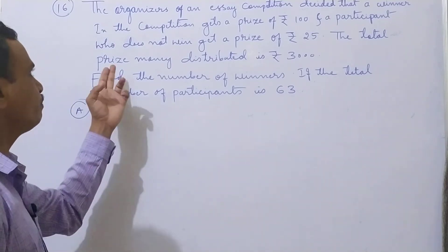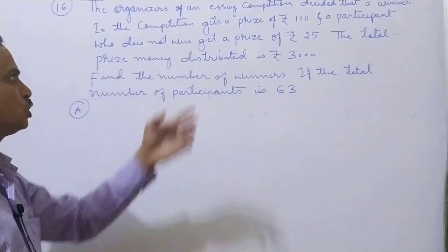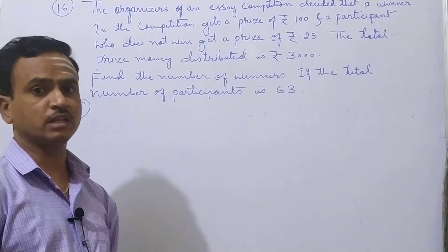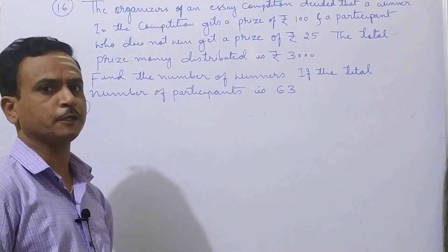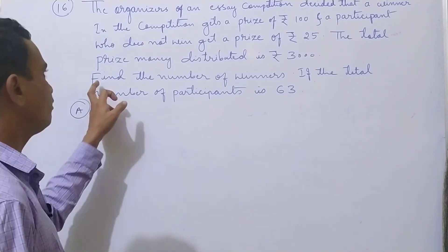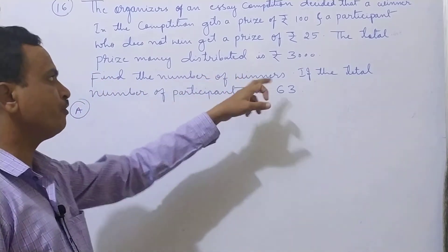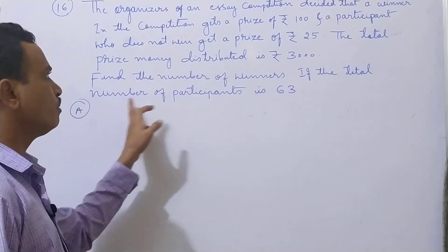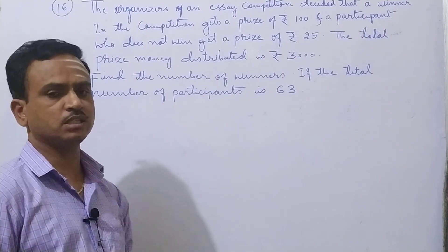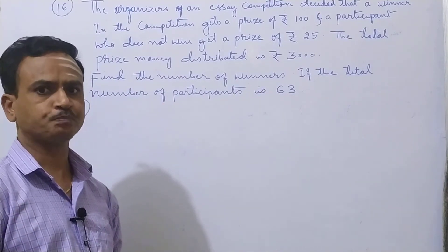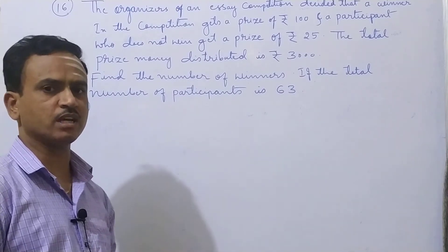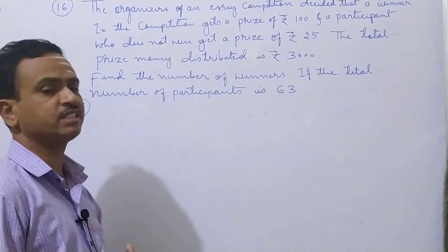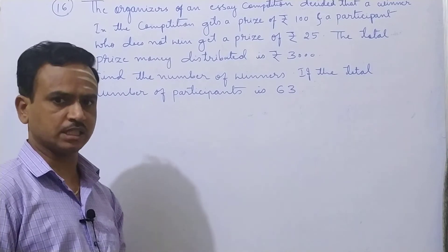The total prize money distributed is Rs 3000. Find the number of winners if the total number of participants is 63. Total number of participants are 63.